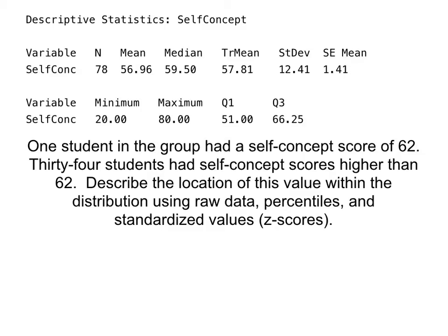Next, we're looking at this one student who had a self-concept score of 62. And we see that 34 students had scores higher than that. Well, there were 78 total students, so 34 students were greater than that, which means 44 students had scores at or below.